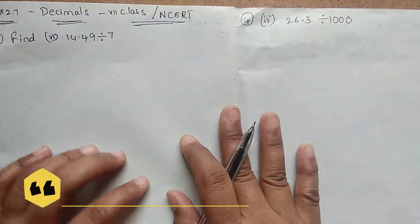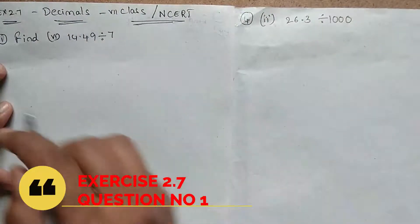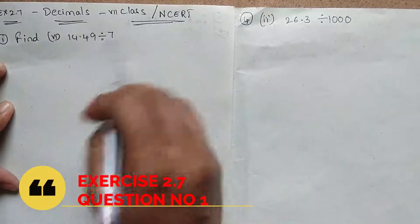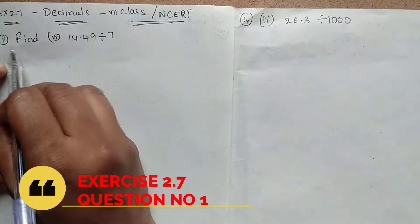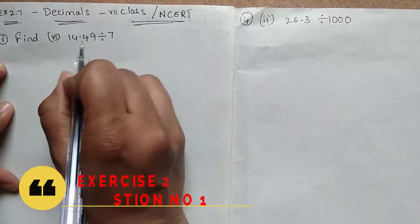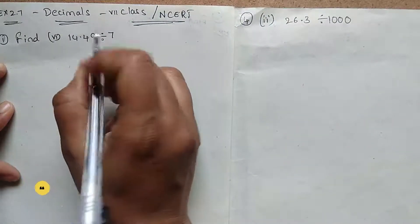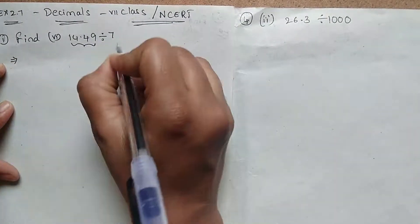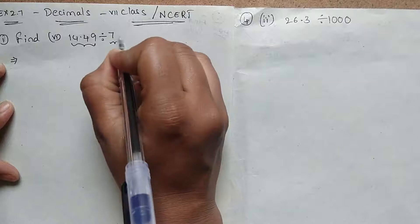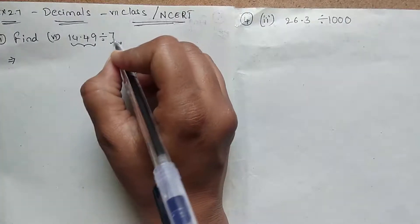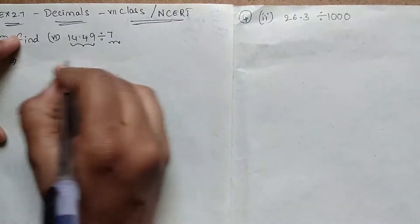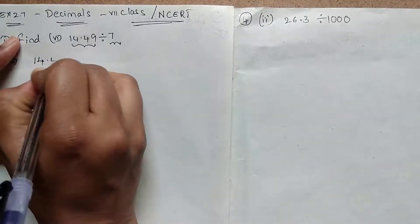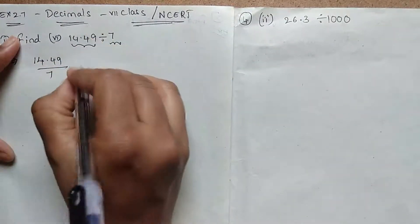Hi, hello, welcome to Maths Medium. Today I came with an exercise problem — the topic was decimals, 7th class NCERT exercise 2.7, question number 1: find 14.49 divided by 7. Here the question has a decimal point in the numerator, no need for decimals in the denominator, so how are we going to do division? Here is 14.49 by 7.